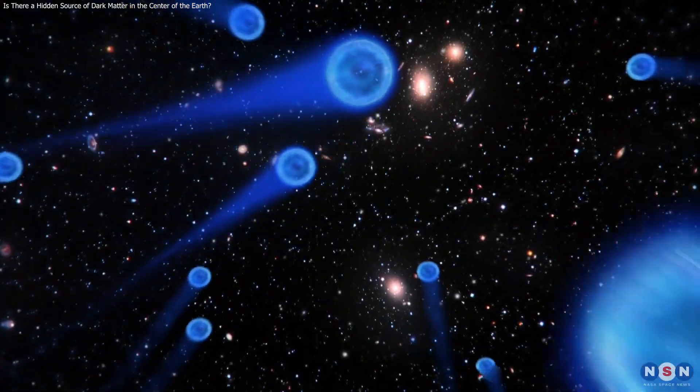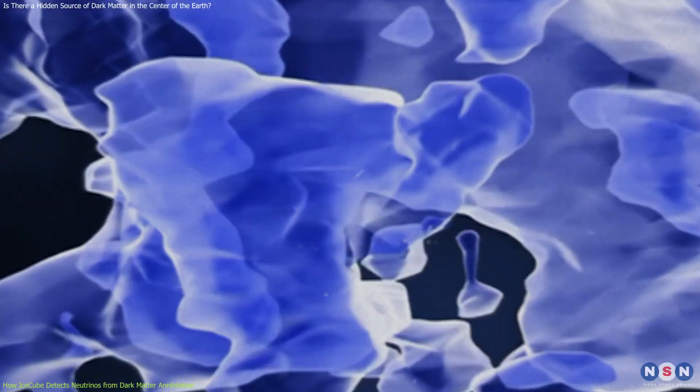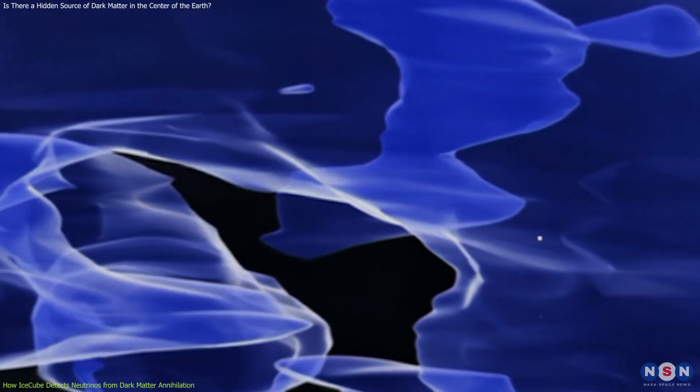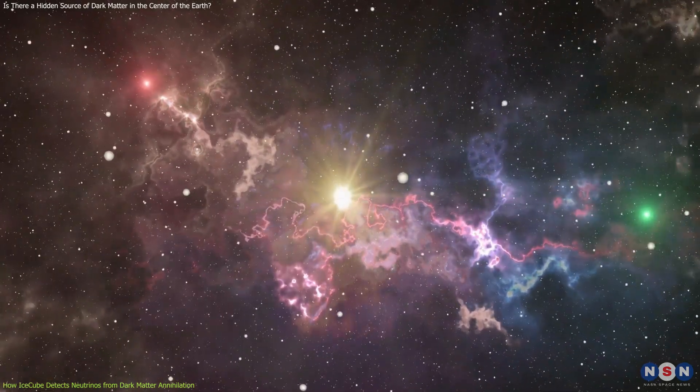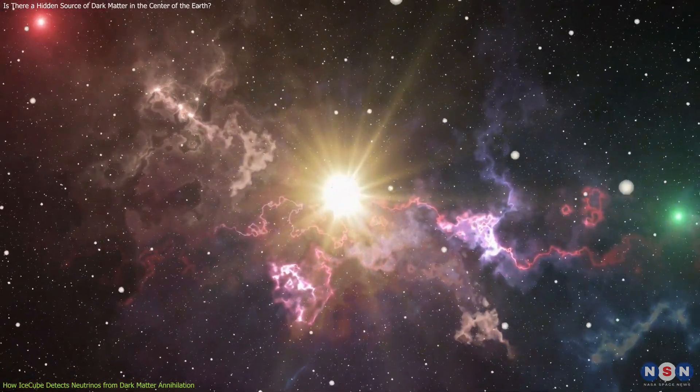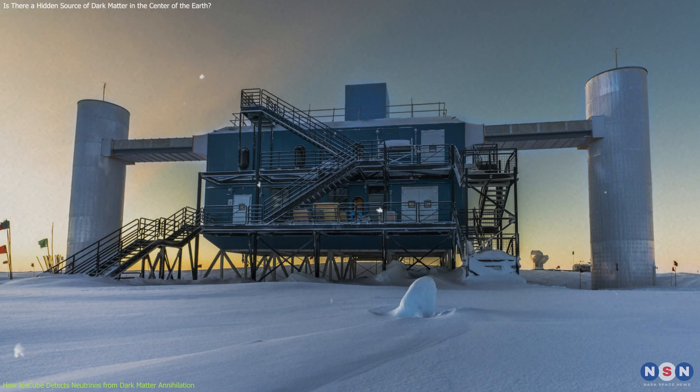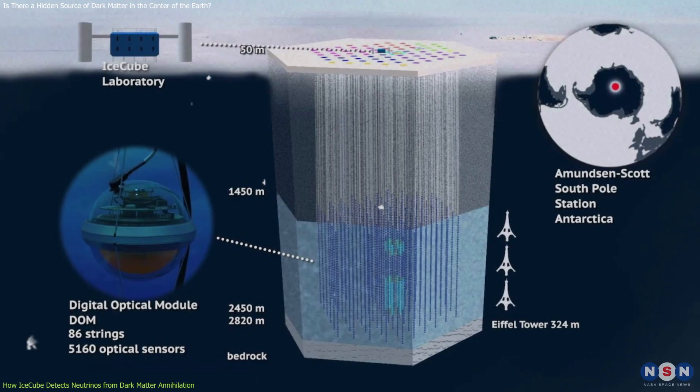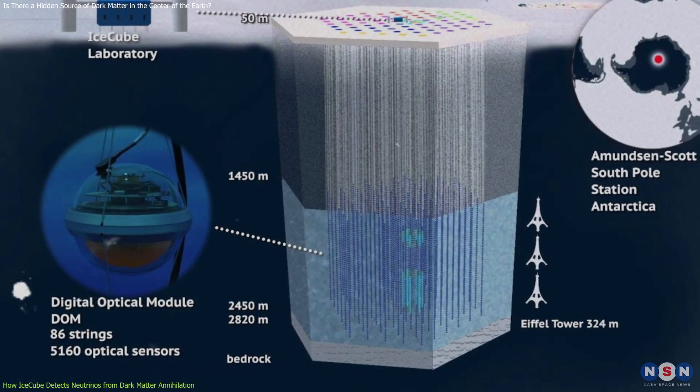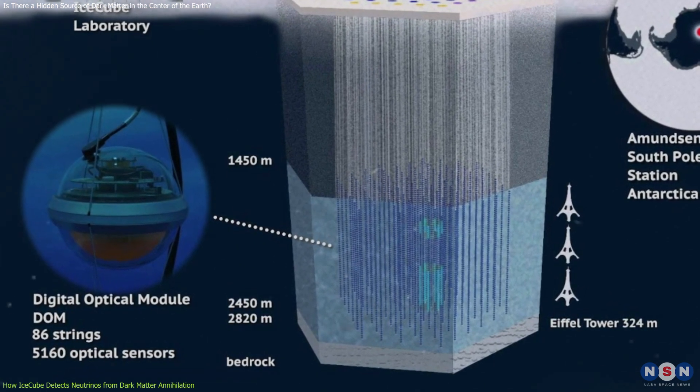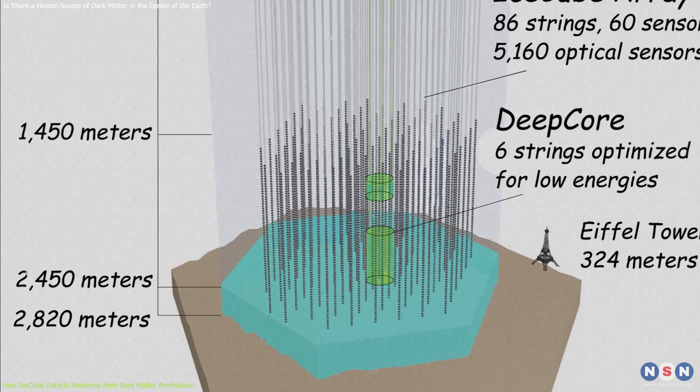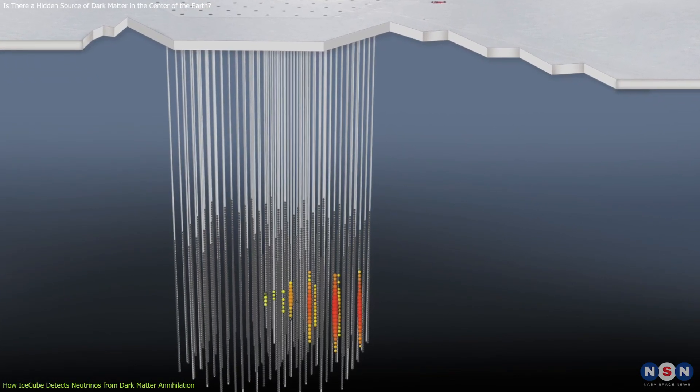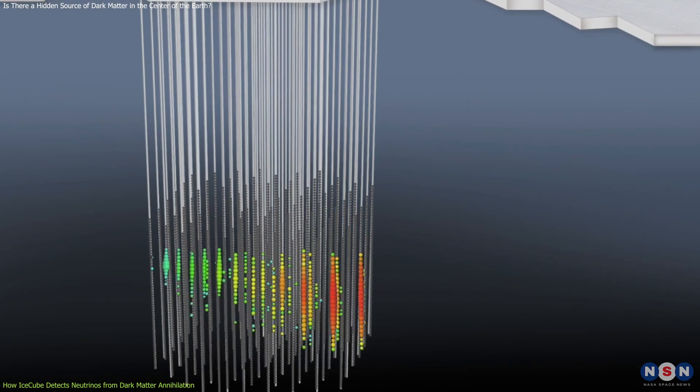So, how do we detect these neutrinos? And how do we know that they are from dark matter and not from something else? Well, to answer these questions, we need to introduce a very special detector called IceCube. IceCube is a neutrino observatory located at the South Pole. It consists of more than 5,000 optical sensors embedded in a cubic kilometer of ice, about 1 to 2 kilometers below the surface. These sensors detect tiny flashes of light that are produced when neutrinos interact with ice molecules.